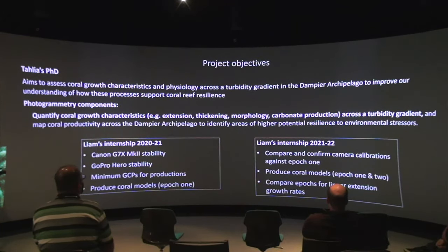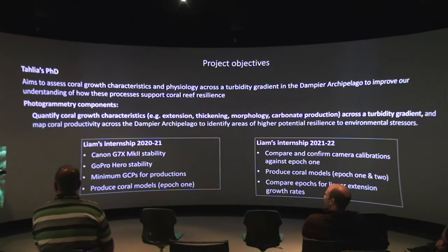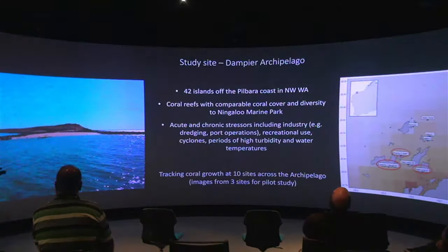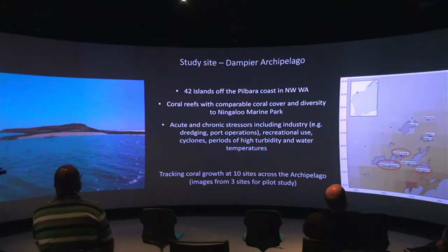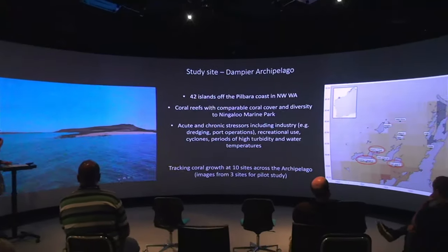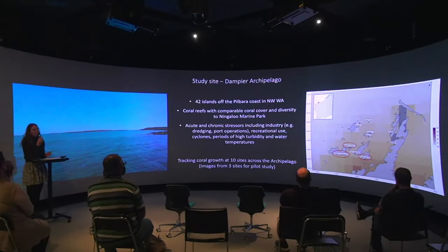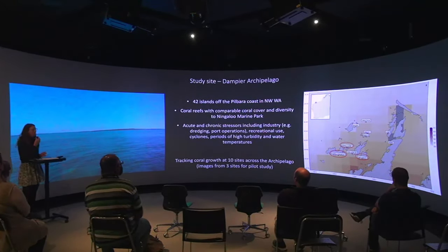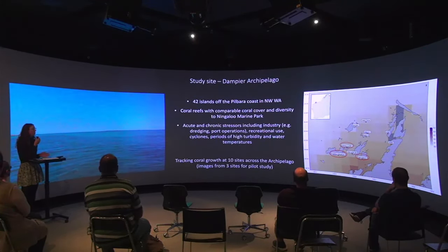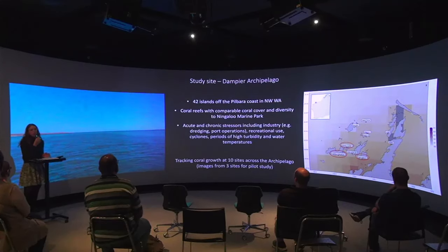Specifically the photogrammetry components: we're looking to quantify coral growth characteristics across this gradient, and then more broadly map coral productivity across the Dampier Archipelago. Liam's internships have also fed into this work. The Dampier Archipelago is comprised of 42 islands off the Pilbara coast in northwest Western Australia.